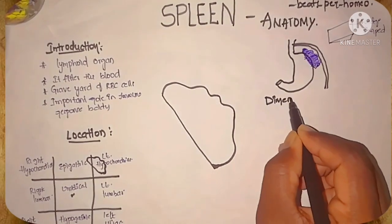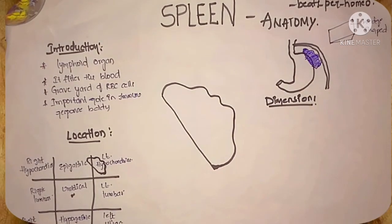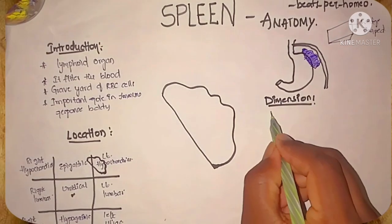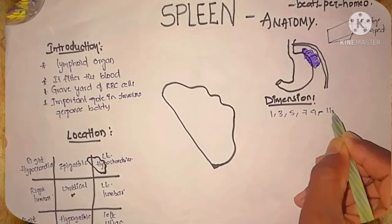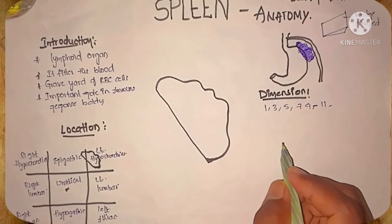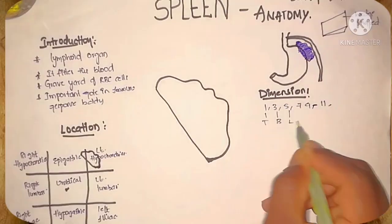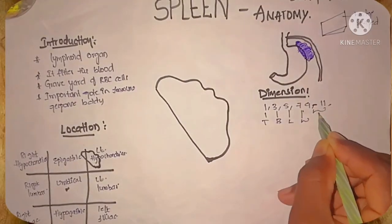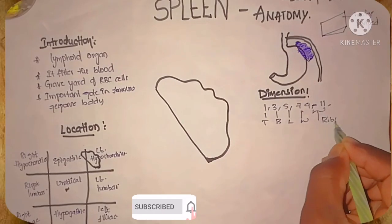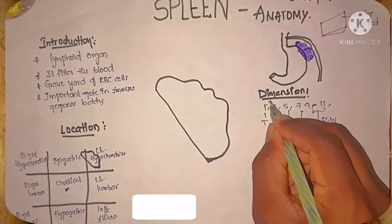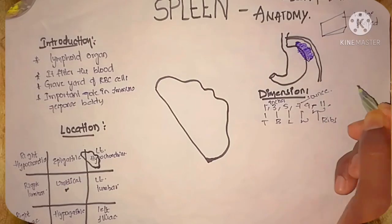Now coming to the dimensions of the spleen. Just remember the odd numbers 1, 3, 5, 7, 9, 11, and the mnemonic for T, B, L, W, and 9 and 11 for ribs. T means thickness 1 inch, broad 3 inches, length 5 inches, and weight 7 ounce, and 9 and 11 for ribs.